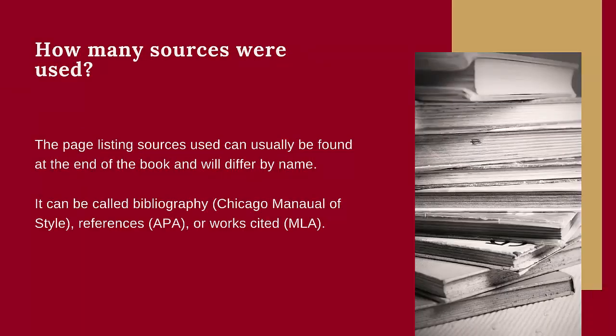The third step is to find the sources that were used in the journal article. This list of sources can be called different things depending on the citation style used in the journal article. In APA, it's called a references list. In MLA, it's called a works cited page. In the Chicago manual style, it's called a bibliography. A scholarly article will have several sources listed, and these sources will usually be from other journal articles or books.